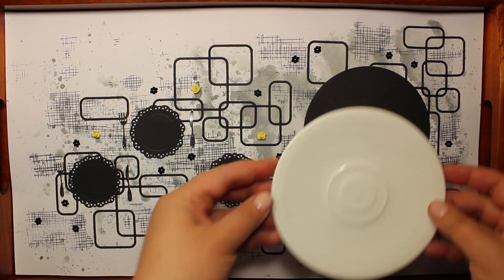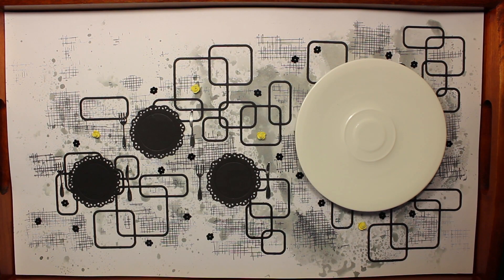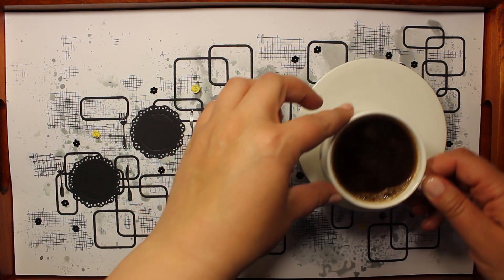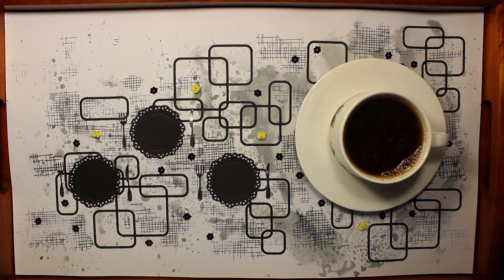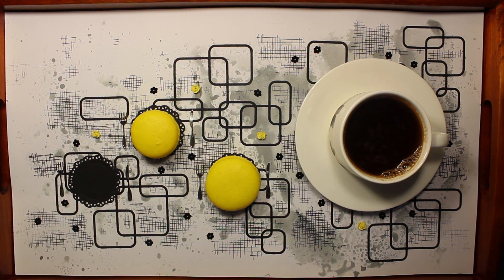So let's set the tray now. I'm placing a saucer on top of a large circle. Then comes a cup of black coffee and some bright yellow macarons on top of little black plates.